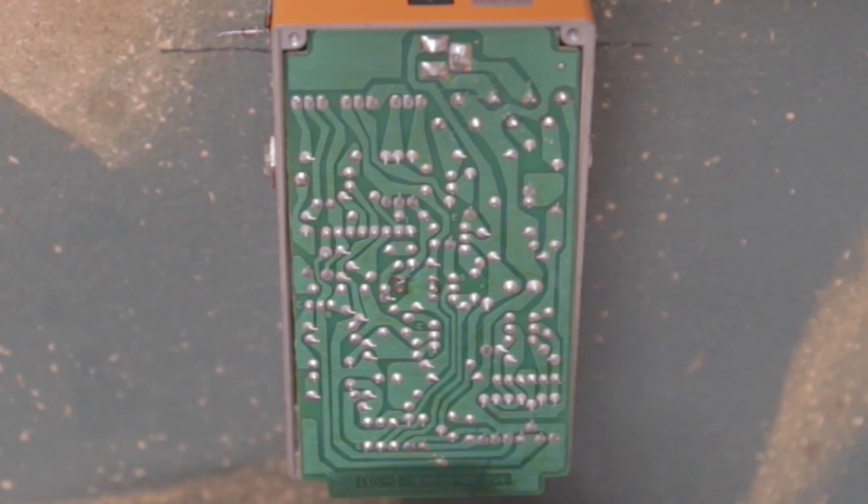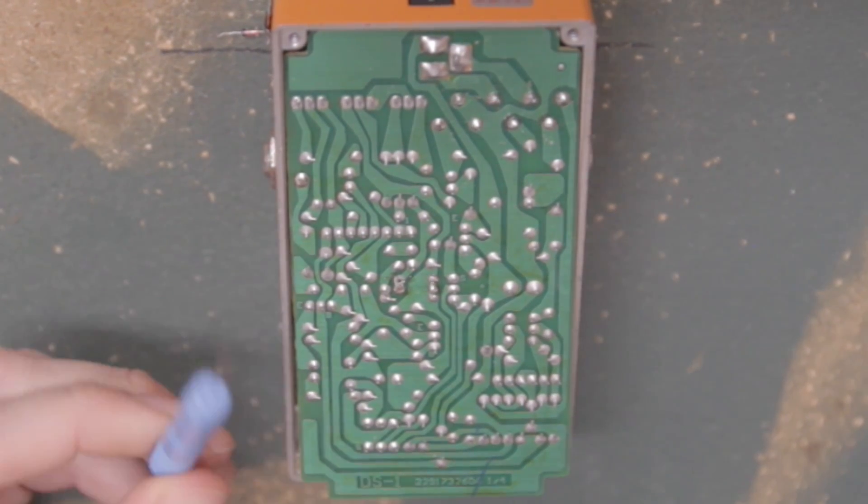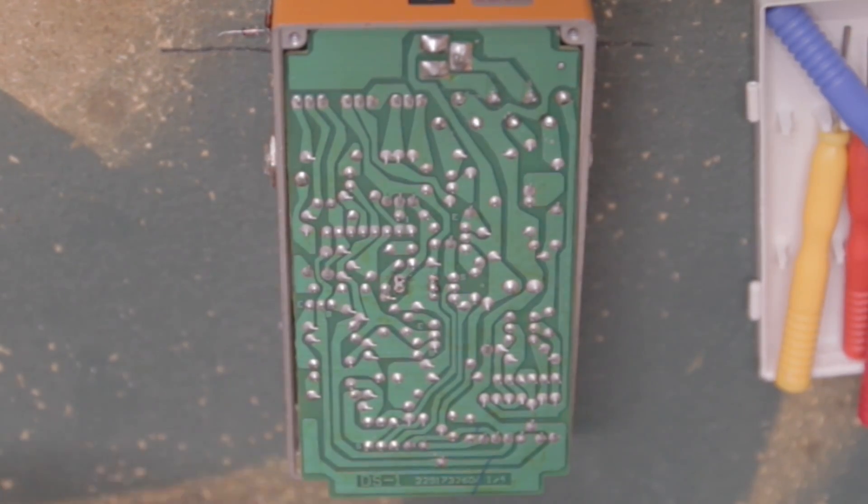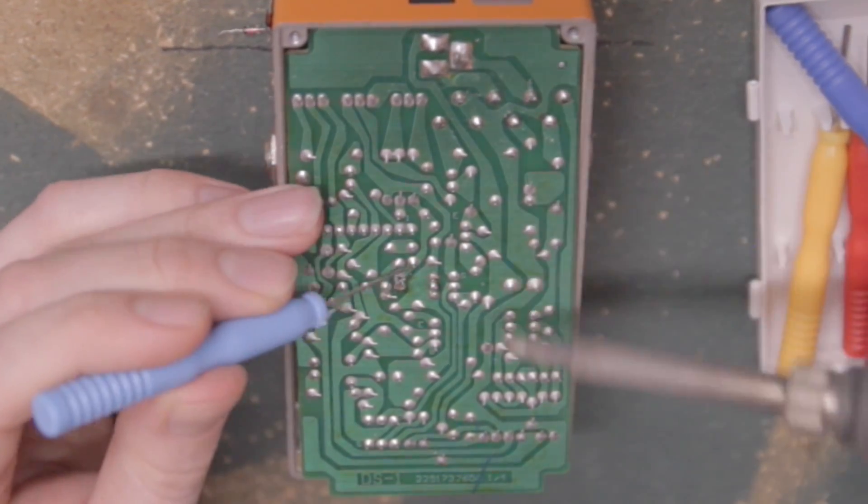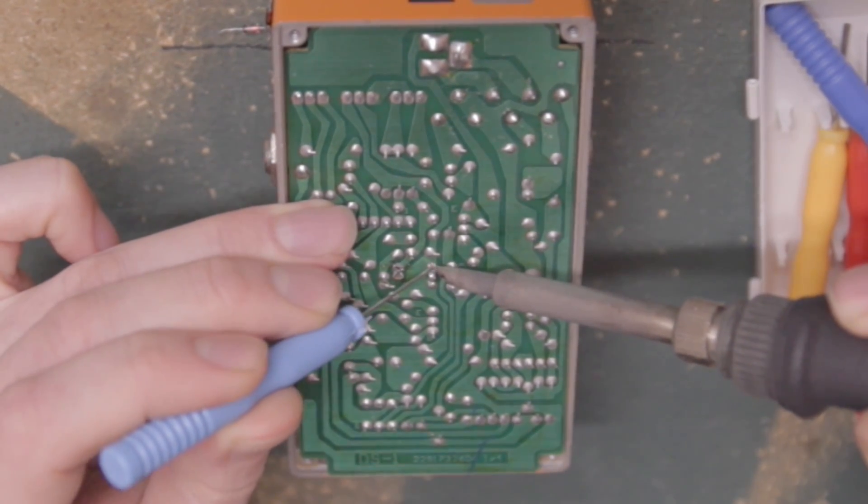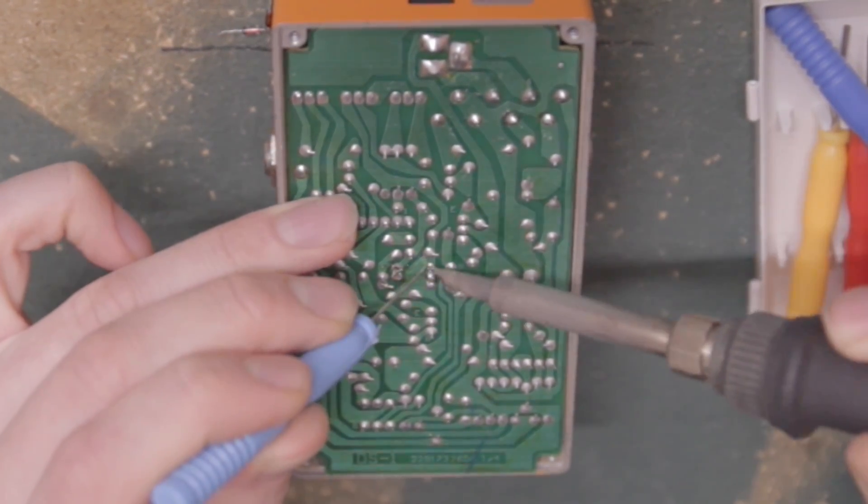The last method is with desoldering needles. Solder doesn't stick to stainless steel, making these super effective at making a clear hole, but they don't help in removing any of the old solder. That's not a super big deal, but if you want to do it properly I recommend removing the bulk of the solder with wick or a pump before using needles.